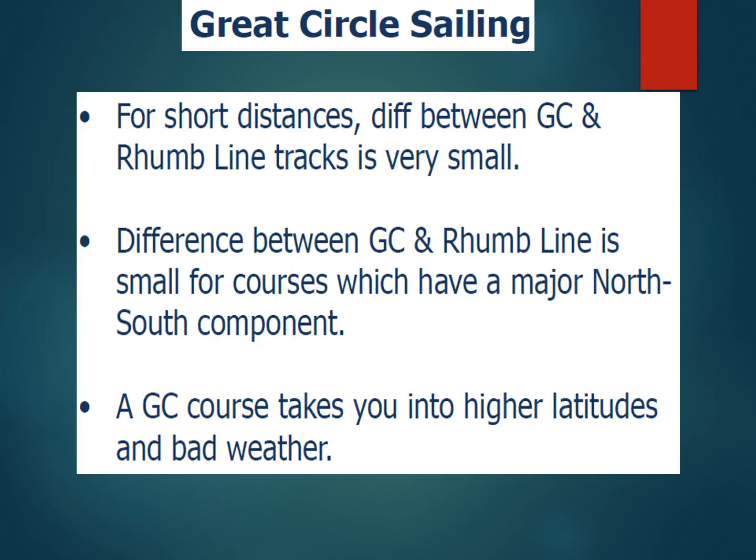If you draw a great circle on a Mercator chart, it will appear as a curve. On the other hand, a rhumb line course drawn on a gnomonic chart appears as a curve as well — this is something discussed in our last video when we talked about Mercator sailing. For short distances, the difference between great circle and rhumb line tracks is very small.